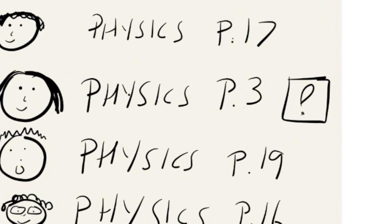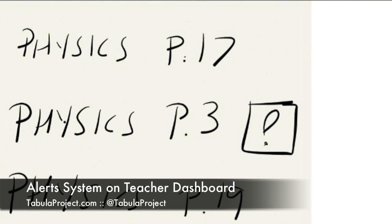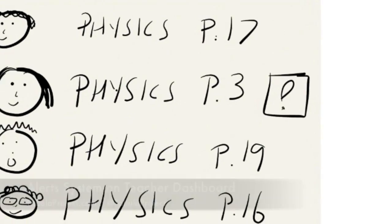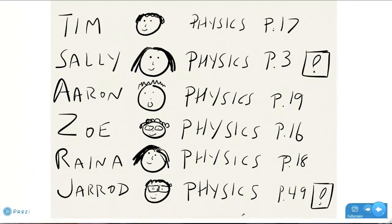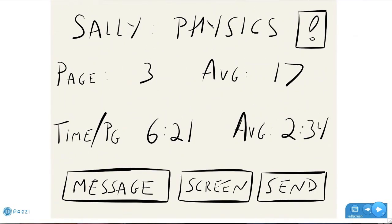Why? Well, if we take a quick scan, we see that most of the class is somewhere around page 16, page 17. Sally's on page 3, Jared's on page 49. So in this case, the teacher notices there's an alert next to Sally's name, tap on Sally on the screen, and it takes you to the alert page.